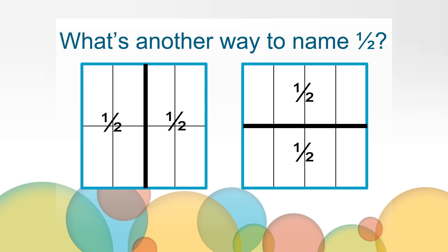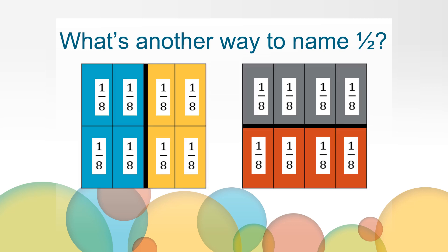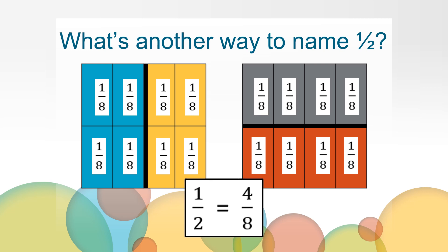What's another way that we can name one half of these rectangles? You may have noticed that the whole is split into eight equal parts, so each part is one eighth of the whole. Eight one-eighth pieces makes up the whole. So how many one-eighth parts make up the half? Four one-eighth parts make up the half. So if four one-eighth parts make up the half, then four eighths is equivalent to one half.